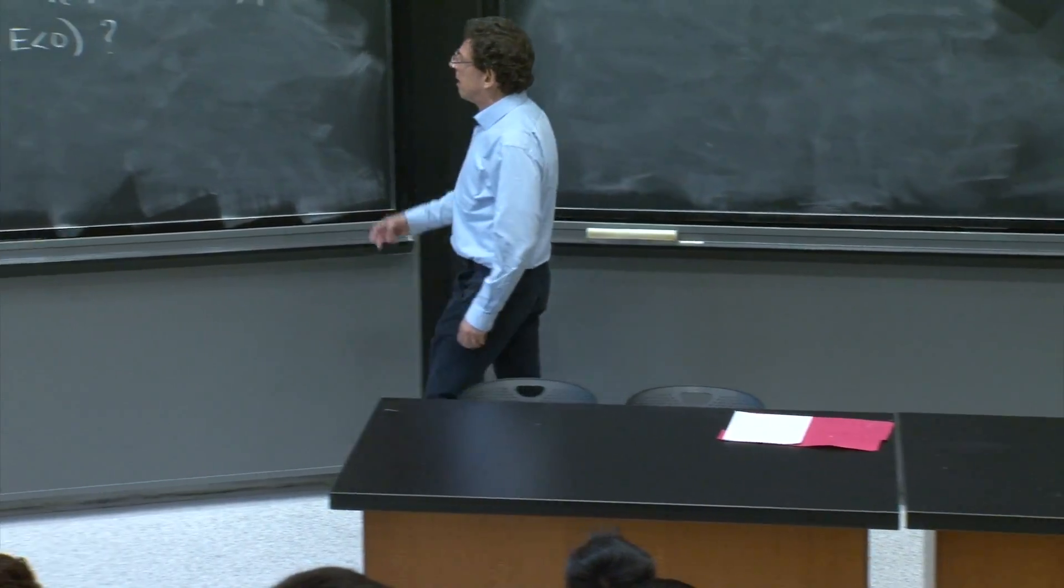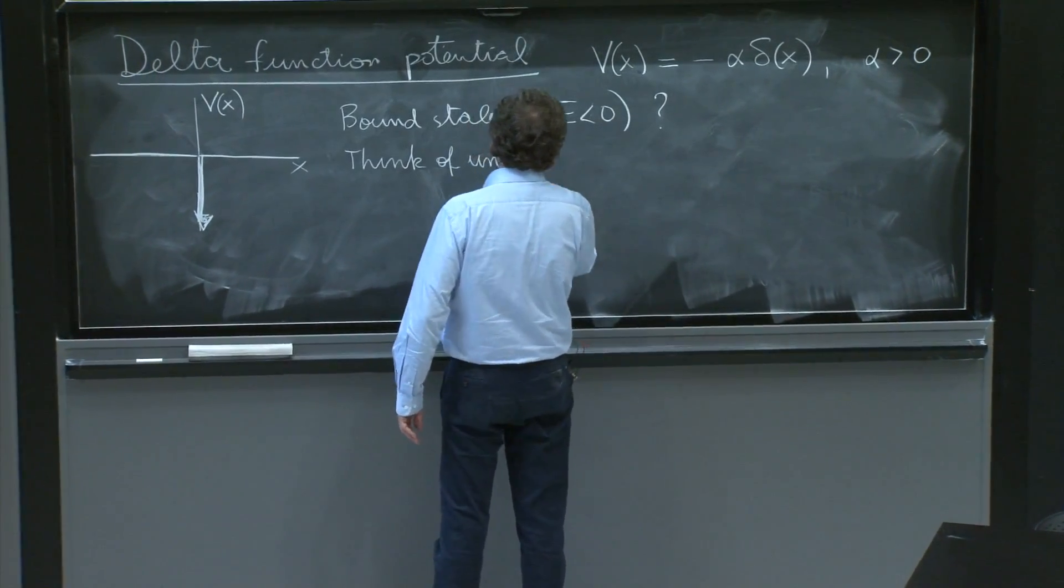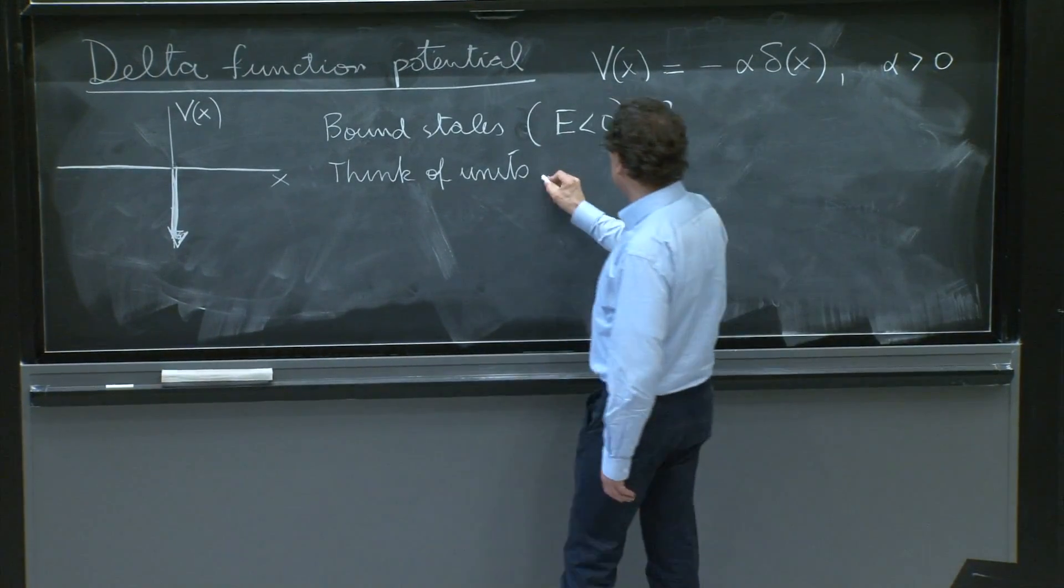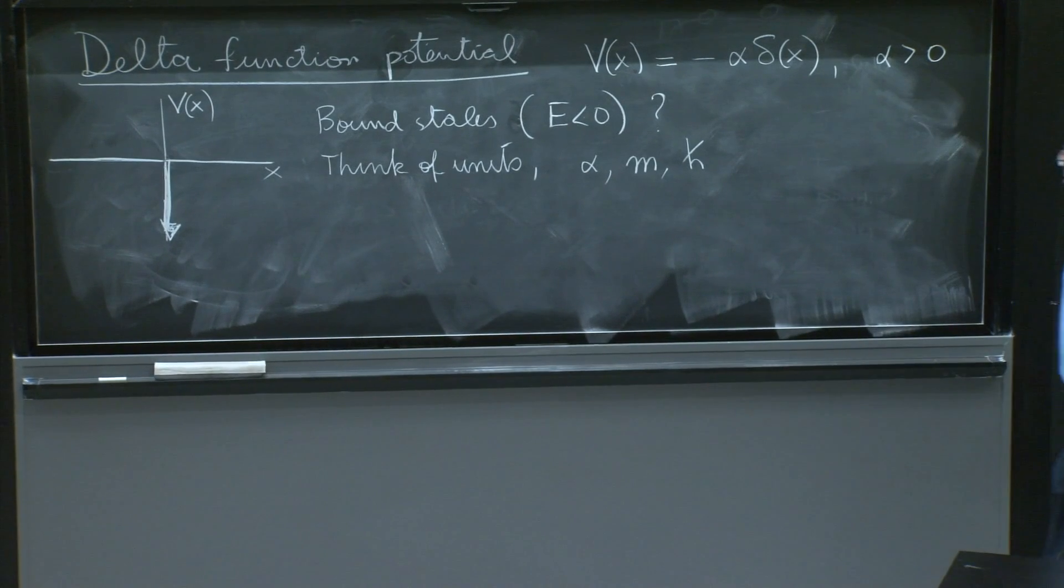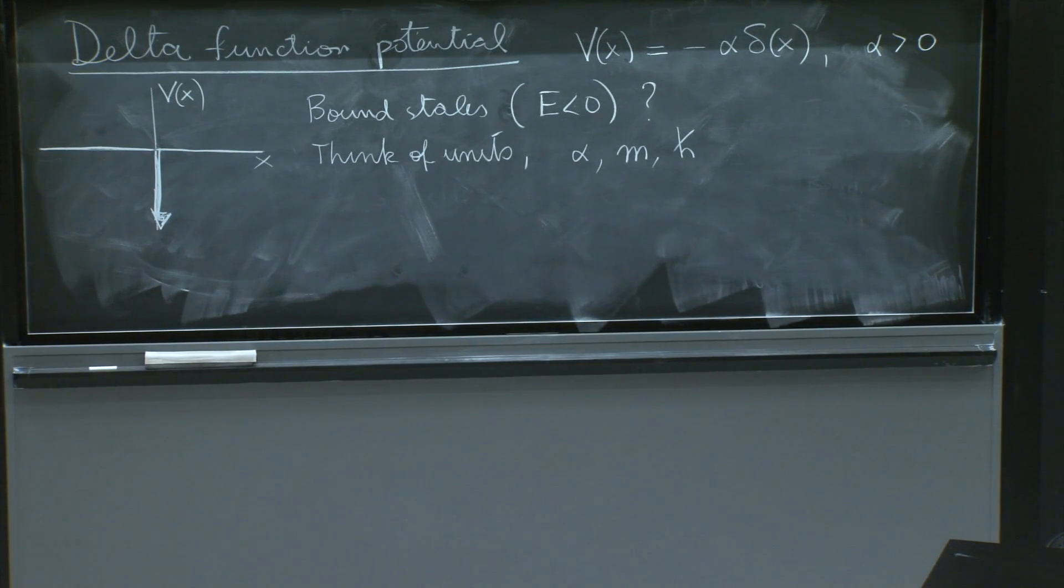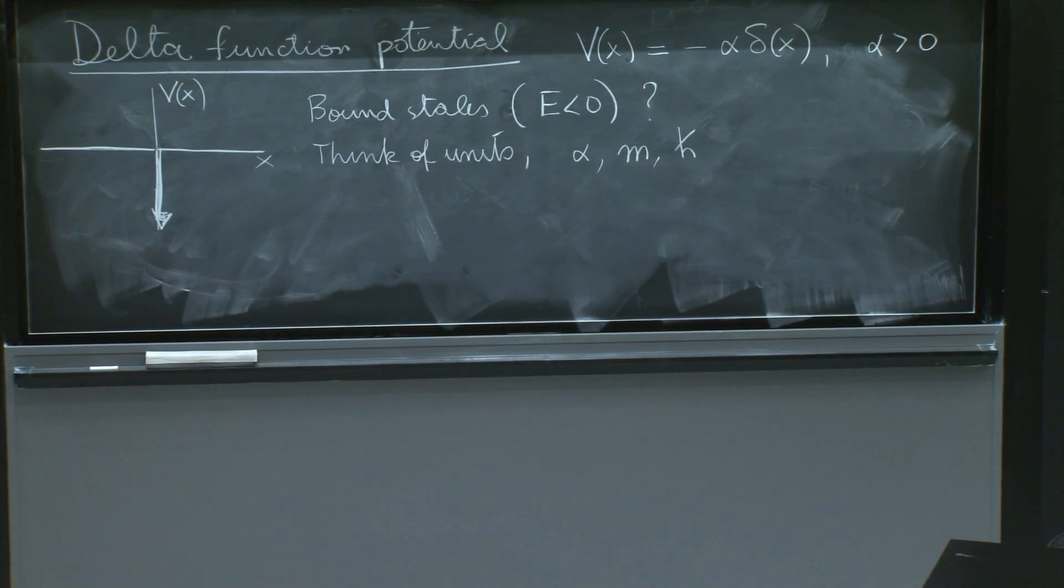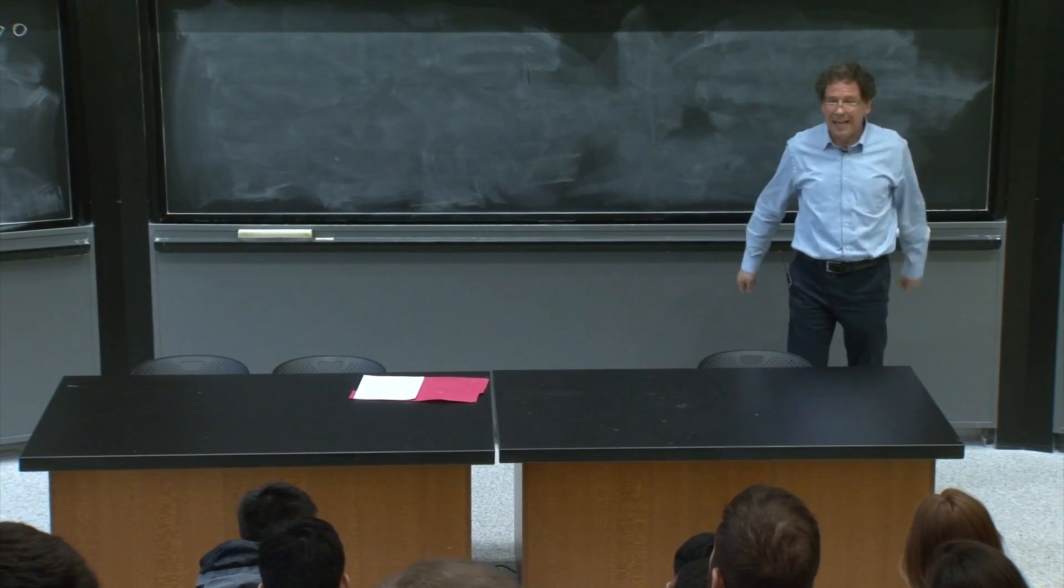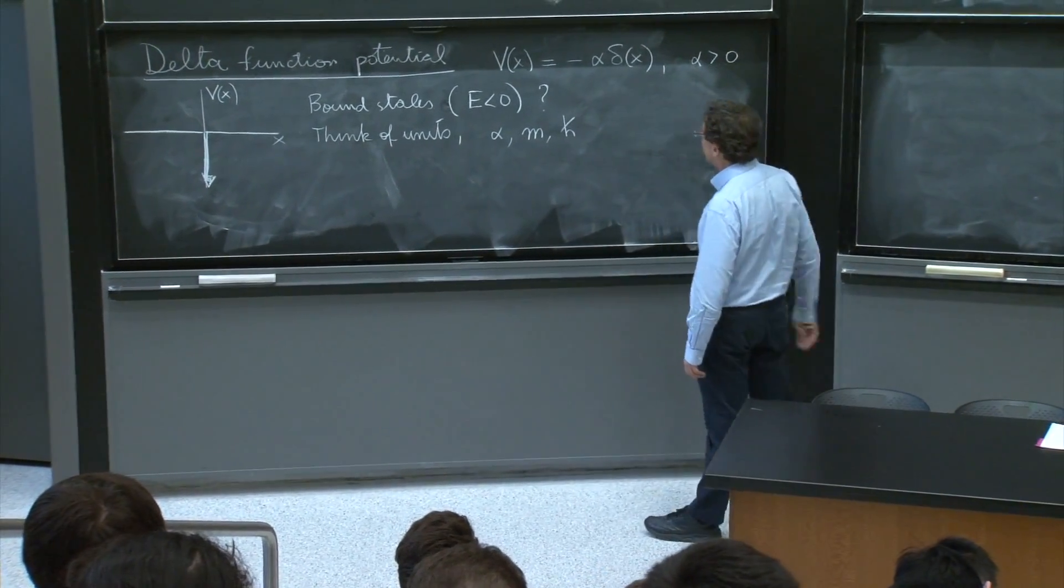One way, as you can imagine, is to think of units. What are the constants in this problem? In this problem we'll have three constants: α, the mass of the particle, and ℏ. With α, the mass of the particle, and ℏ, you can ask how do I construct a quantity with units of energy? If there's only one way to construct the quantity with units of energy, then the energy of a bound state will be proportional to that quantity, because that's the only quantity that can carry the units. And here indeed there's only one way to construct a quantity with units of energy from these three.